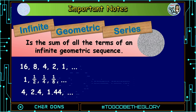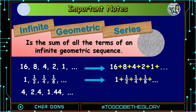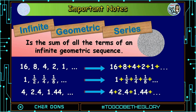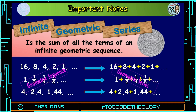What if we add up all the terms? 16 plus 8 plus 4 plus 2 plus 1, and so on. Or, 1 plus 1.5 plus 1.4 plus 1.8, and so on. Or, 4 plus 2.4 plus 1.44, and so on. It becomes a geometric series. A geometric series starts as a geometric sequence, and then we add up all the terms — that's what makes it a series.